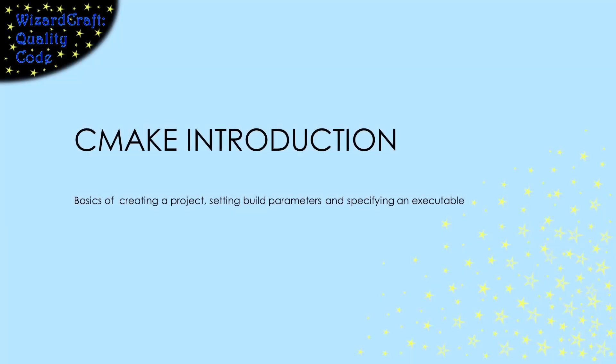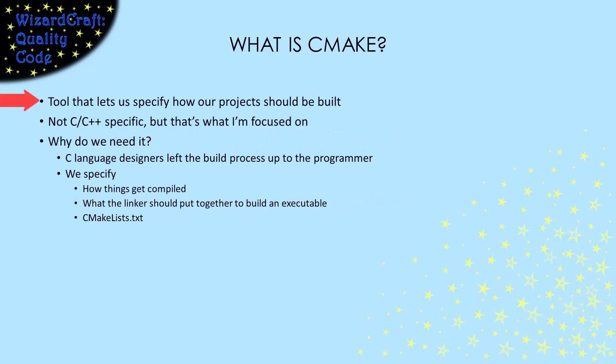This is the absolute basics of CMake, targeted at compiling C projects. Just enough to be able to build executables from multiple files, and to control the settings used by the build process. CMake is a tool that lets us design how a build system takes our source code and builds our executables from it.